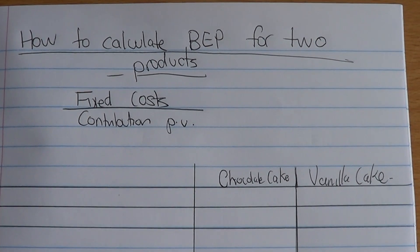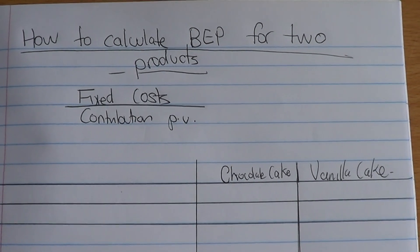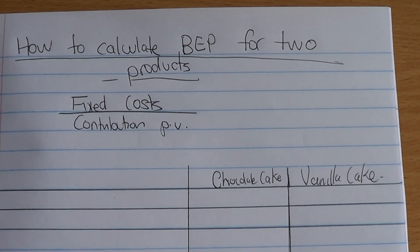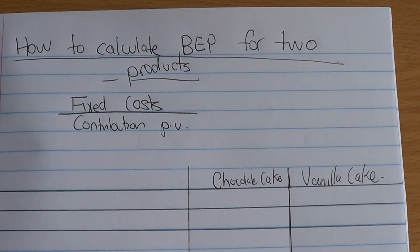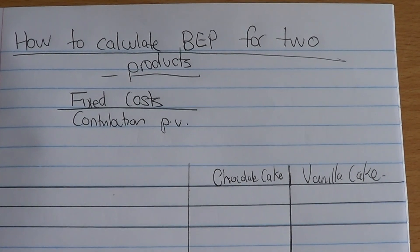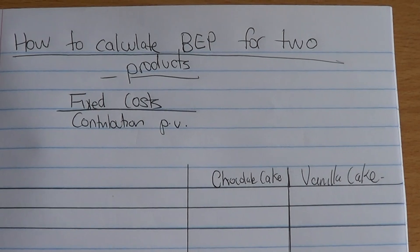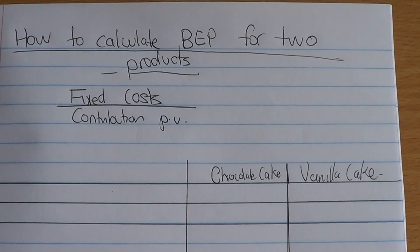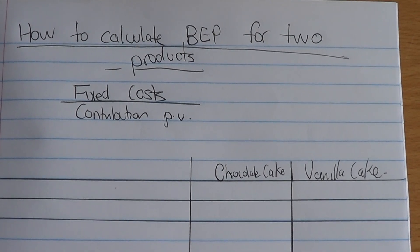So you might think, well, break-even point — it's just fixed cost divided by contribution per unit. But sometimes people forget how to calculate for two products because it's a bit different and maybe a little bit more difficult to calculate break-even point for two units — I mean, for one product.